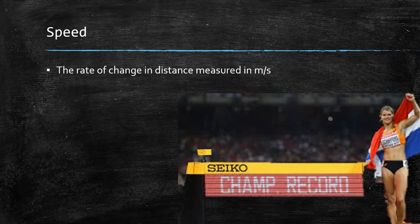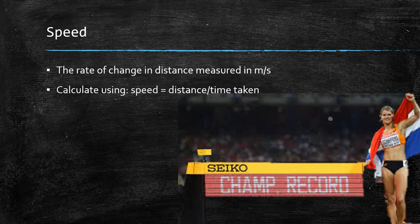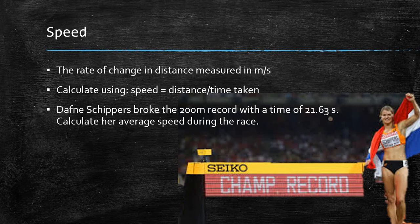Speed is the rate of change in distance, and it is measured in metres per second. We calculate this using: speed equals distance divided by time. So if Daphne Schippers — a very famous Dutch sprinter who specialises in the 200 metres — broke the 200 metre world record with a time of 21.63 seconds, can you calculate her average speed? The answer is 9.25 metres per second, calculated by dividing 200 metres by 21.63 seconds.